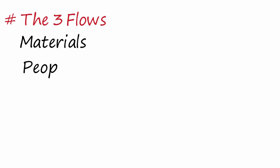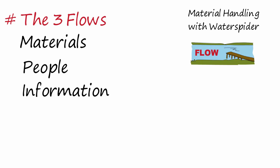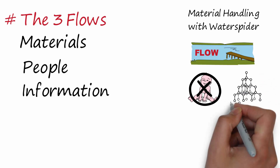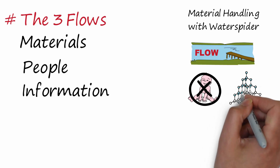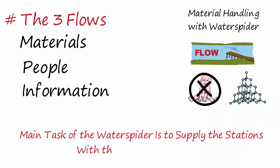It is important to remember that a lean company must optimize the three flows: materials, people, and information. Material handling through the water spider is essential to keep the flow of materials constant. The water spider does not have to be a young and inexperienced figure who supplies only the material — he has to perform very complex tasks that can guarantee the continuity of the flow. In any case, the main task of the water spider is to supply the stations with the necessary materials according to a standardized process.